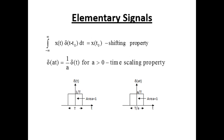The shifting property of the impulse is: the integral from −∞ to +∞ of x(t)·δ(t − t₀) dt = x(t₀). Both properties are shown in the signal diagram.